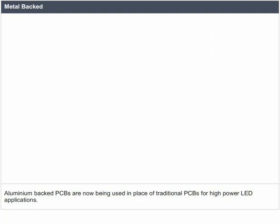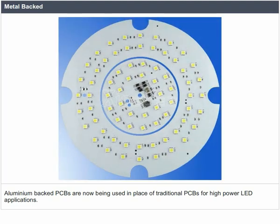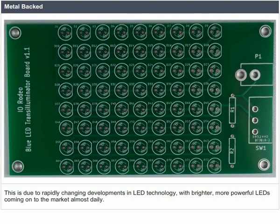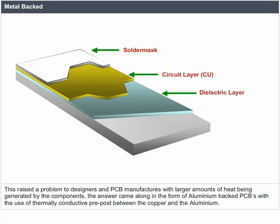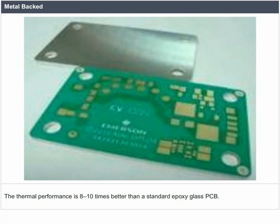Metal backed: aluminum-backed PCBs are now being used in place of traditional PCBs for high-power LED applications due to rapidly changing developments in LED technology. Large amounts of heat being generated by the components raised a problem for designers and PCB manufacturers. The answer came in the form of aluminum-backed PCBs; with the use of thermally conductive pre-preg between the copper and the aluminum, the thermal performance is 8 to 10 times better than a standard epoxy glass PCB.